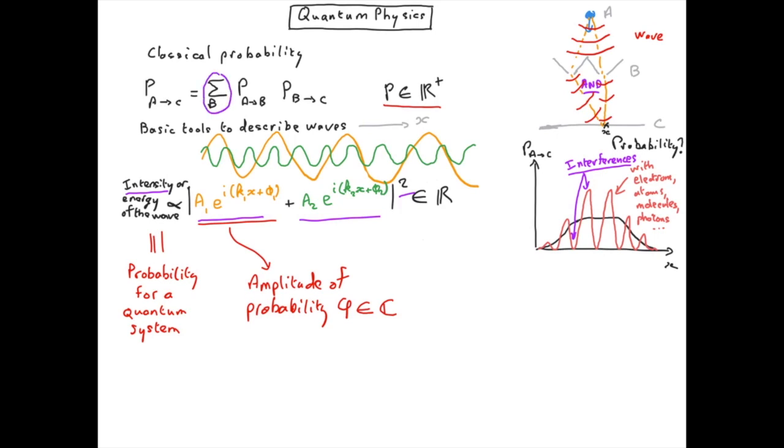But we need to sum the amplitudes and then we will take the modulus squared and then we will eventually get a probability which will exhibit interference patterns.